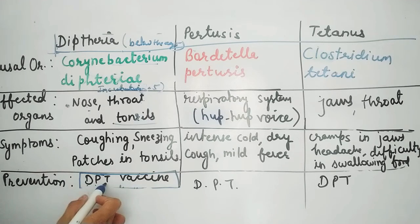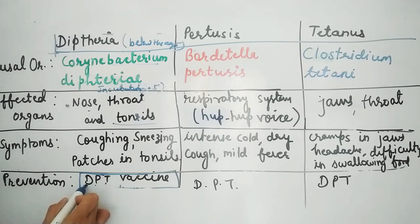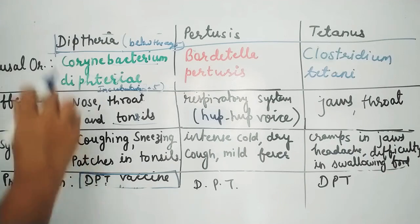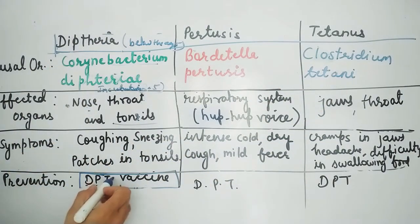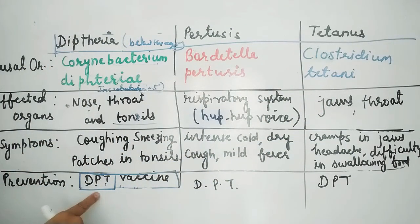DPT stands for D — Diphtheria, P — Pertussis, and T — Tetanus. This is a combination vaccine for three diseases.